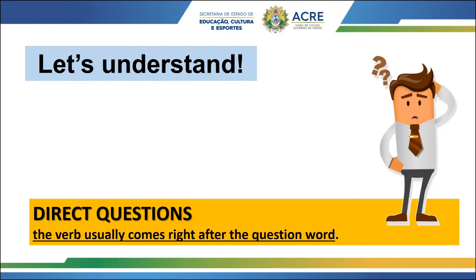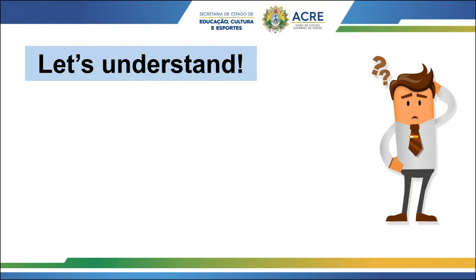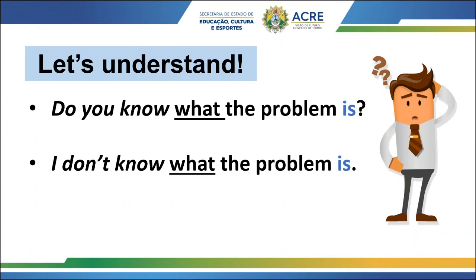First, let's see an example. The question is: 'What is the problem?' This question is a direct question. In indirect questions, the verb usually comes right after the question word. So: 'What is the problem?' Let's go on. We have two more examples. The first question is: 'Do you know what the problem is?'